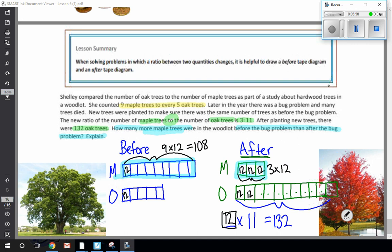And over here, three sets of twelve is thirty-six. You could do three sets of ten, which is thirty, and then three sets of two to make your six. And so I've got one hundred eight maple trees before the bug problem, and then I have thirty-six maple trees after the bug problem.